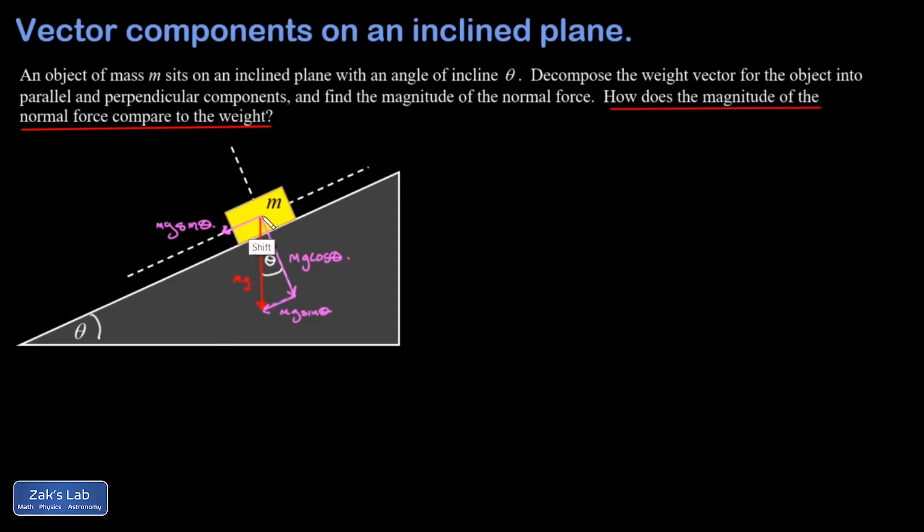Besides the weight, there's one other force acting on this object: the normal force. That's the force acting perpendicular to any surface to stop an object from sinking into the surface. This mass is constrained to the surface with no acceleration perpendicular to it. The mass won't spontaneously jump off or sink into it, therefore the forces must be balanced in the perpendicular direction. This means the normal force must have a magnitude of mg cosine theta.